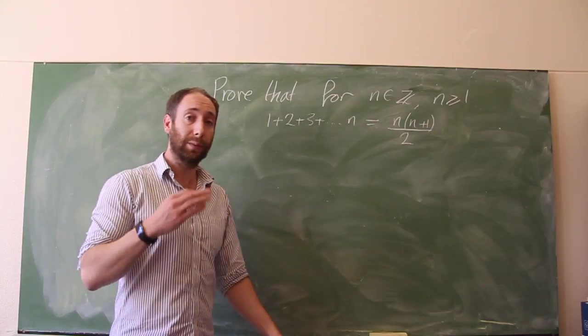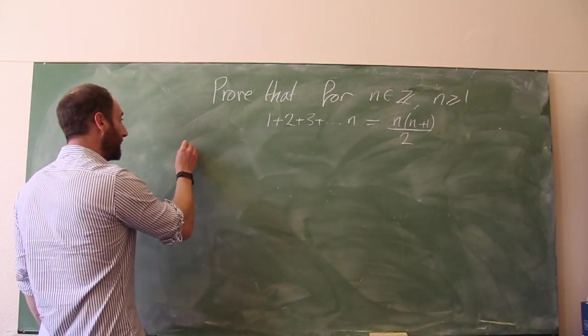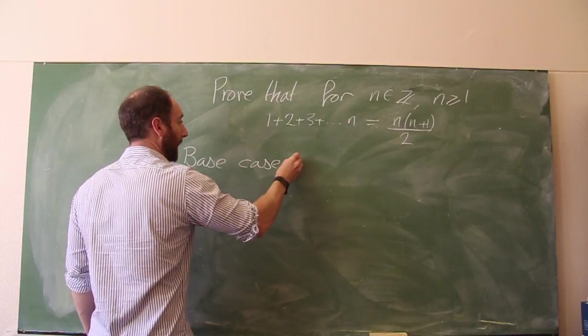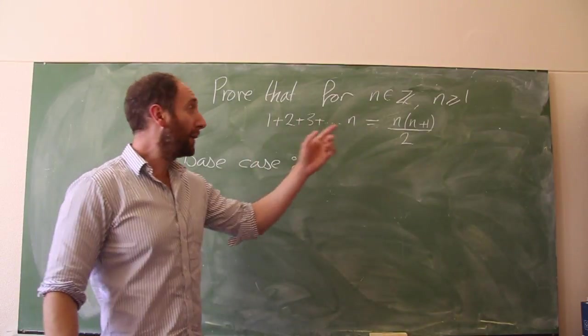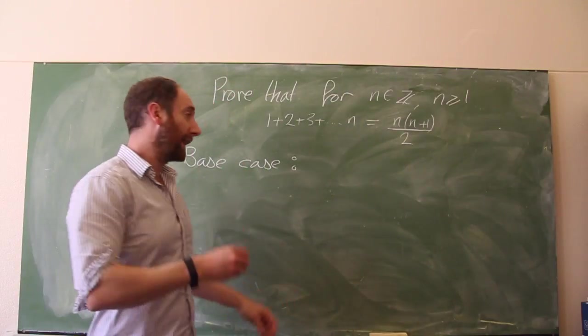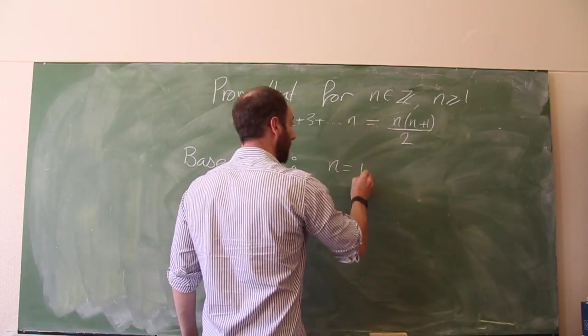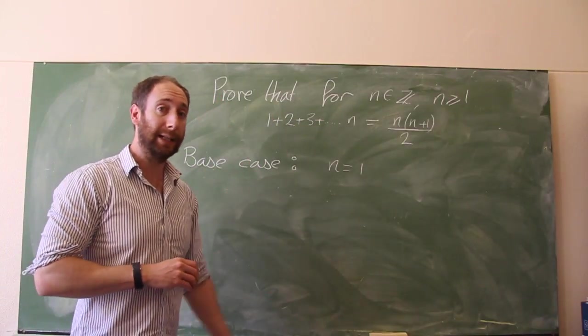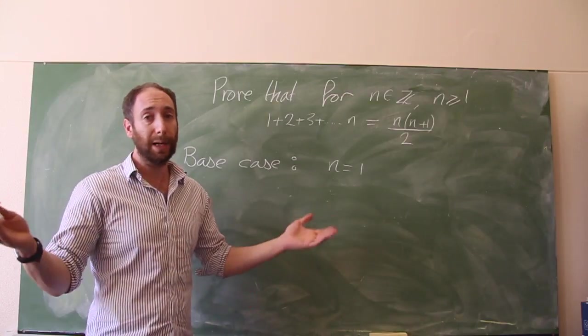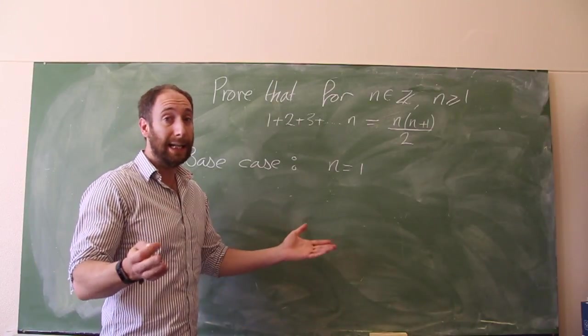And the steps are the same as in all inductive proofs. So what do we do? The first thing that we do is we prove the base case. So we say, base case, and in this case, the lowest number here, so it's all integers greater than or equal to 1, and the base case is then n equals 1. It's really important to check exactly what the base case is. Sometimes it's going to be 0, sometimes it's going to be 1, sometimes it might be 9 or 10. It can be any integer.